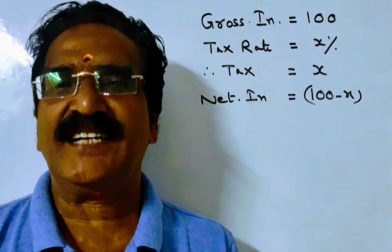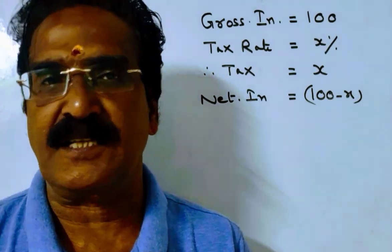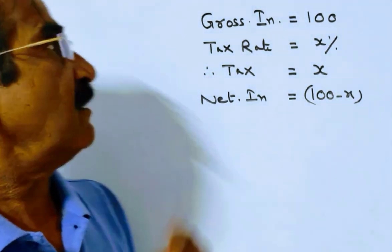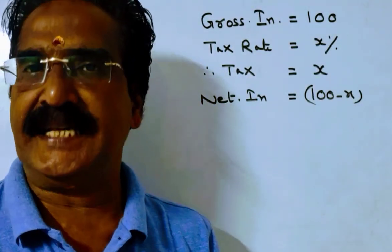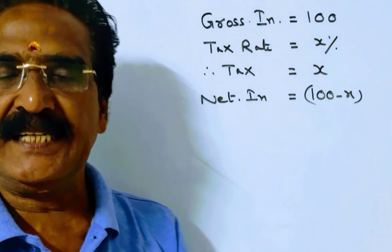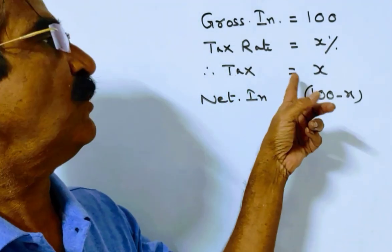Hi friends, good morning. Please look at the next problem in percentage. The problem is given in the description box. Let's say gross income is 100 rupees and income tax rate is x percent. So the applicable tax is equal to x.